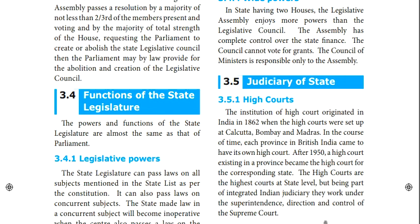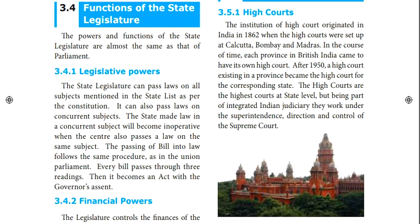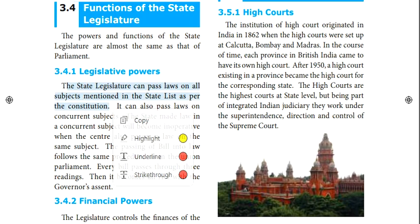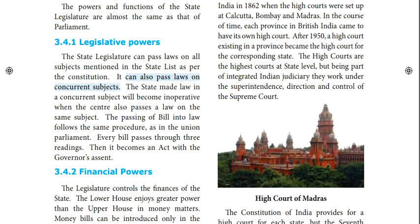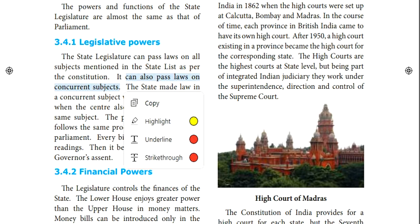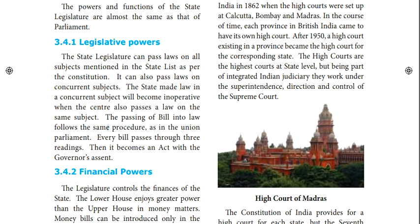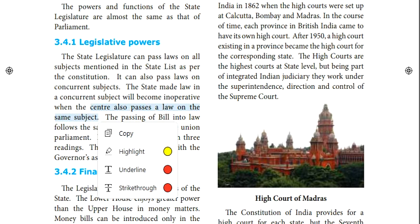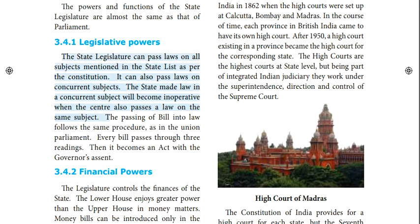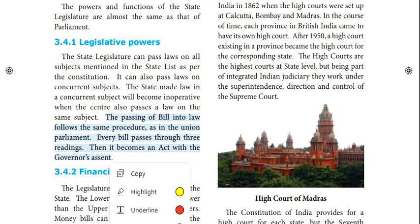The state legislature is not the best place for all laws. For state matters, the state legislature passes the law. If a concurrent subject is involved, the state can pass a law, but if there is a conflict, it needs to go to the concurrent list and requires presidential assent. The passing of a bill into law follows the same procedure as in the union parliament.